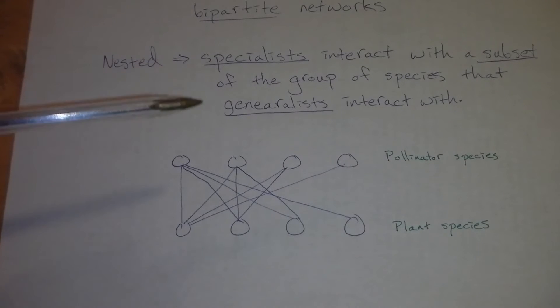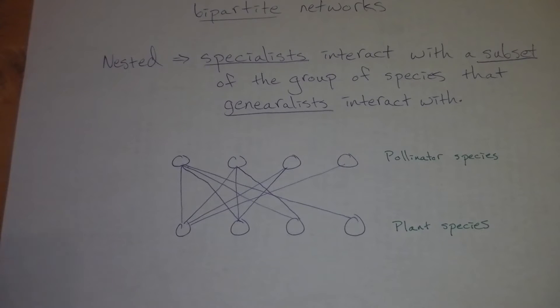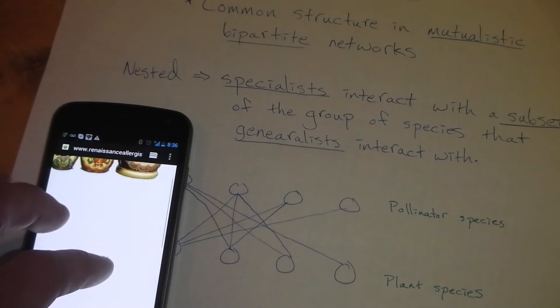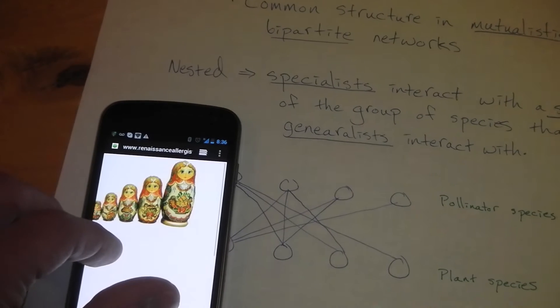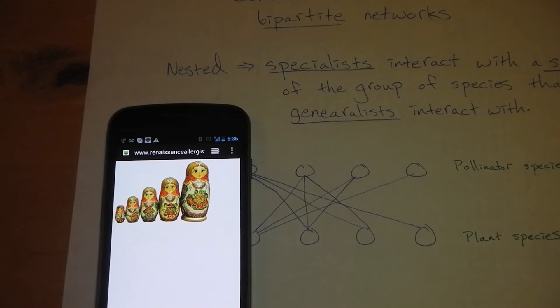So this is an example of a perfectly nested network. Another commonly used analogy for bipartite networks is this example of Russian dolls. You can kind of see that essentially they're subsets of one another. It's a heuristic way to think about nestedness.